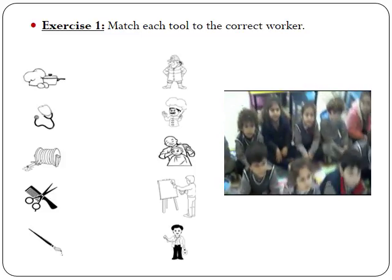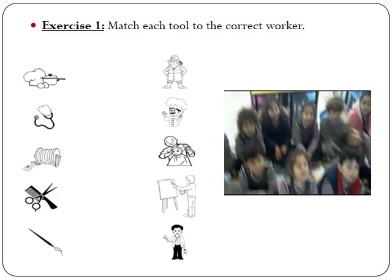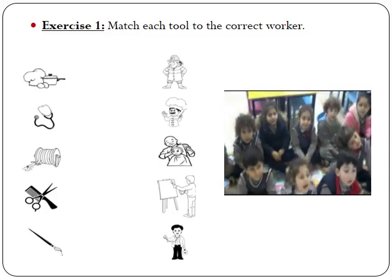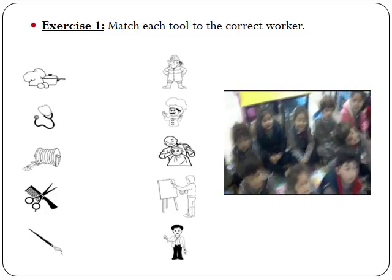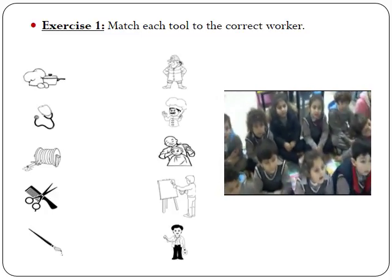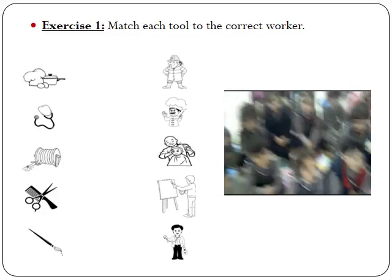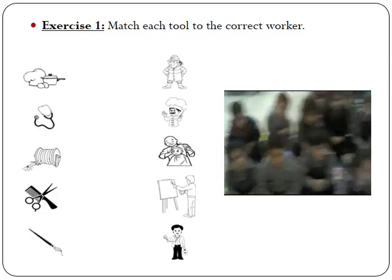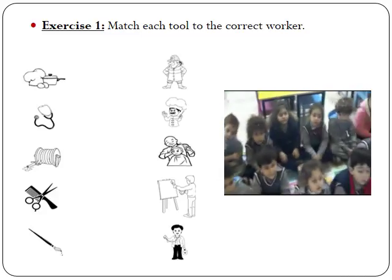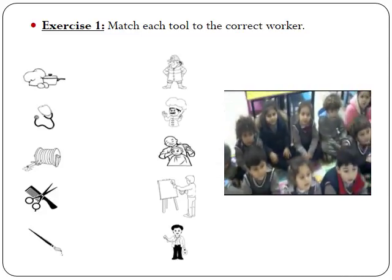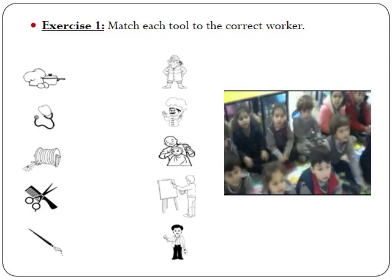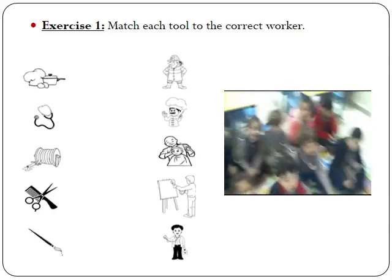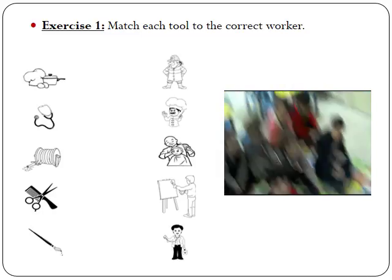What can you see here? Hat. Fan. Stethoscope. Hose. Scissors and thumb. Paintbrush.